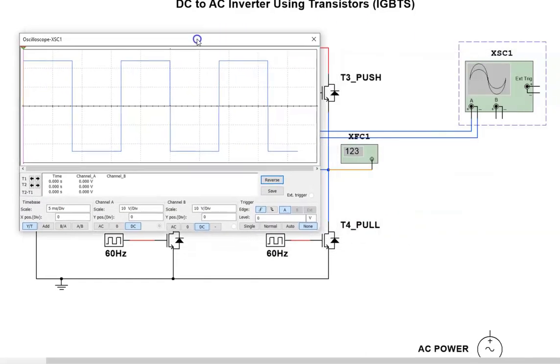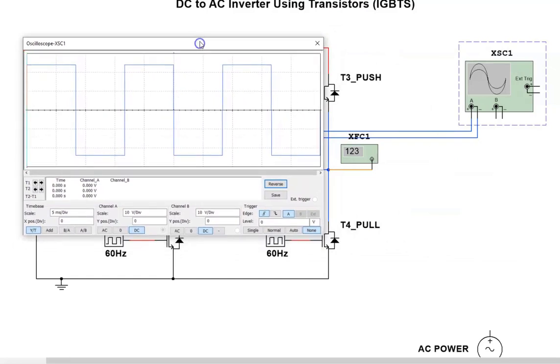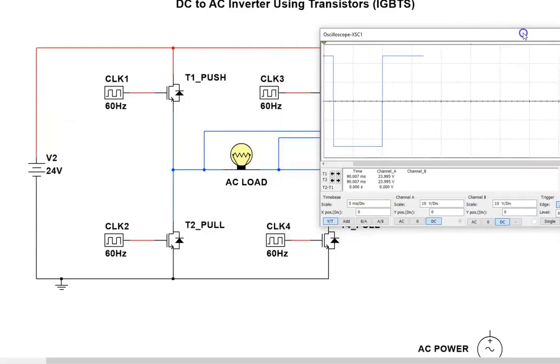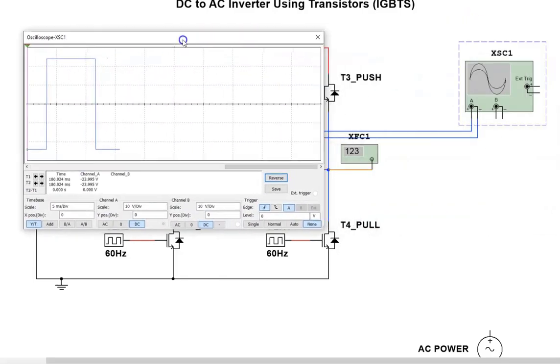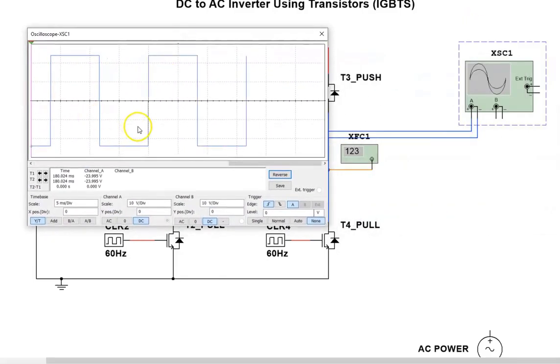And that is our output. That's what the load sees for voltage: positive, negative, positive, negative. And you can see the load sort of flashing. This does not simulate in real time. So that's square wave inverted AC coming off a DC supply.